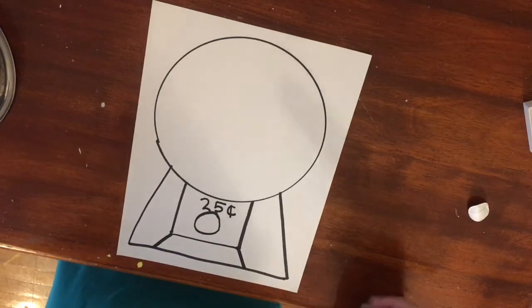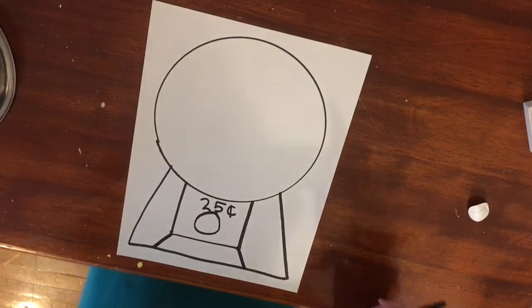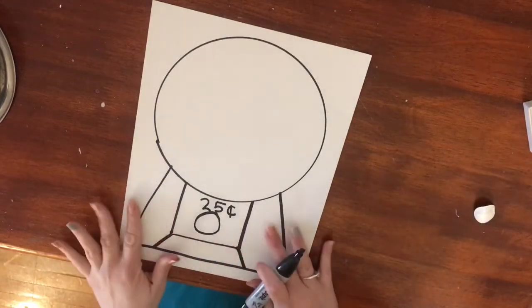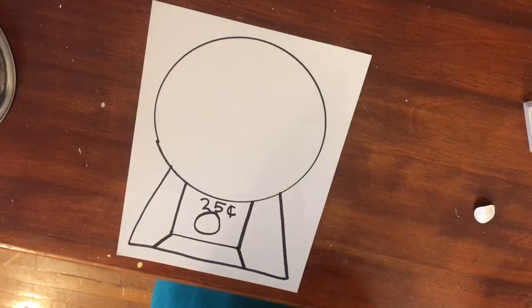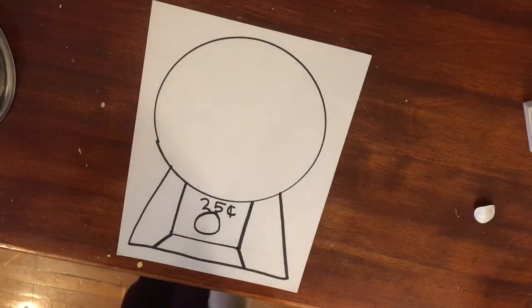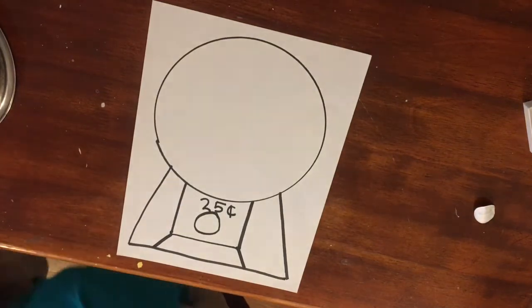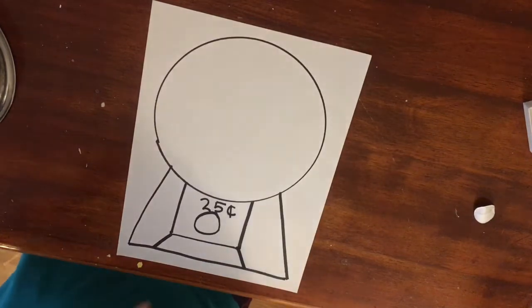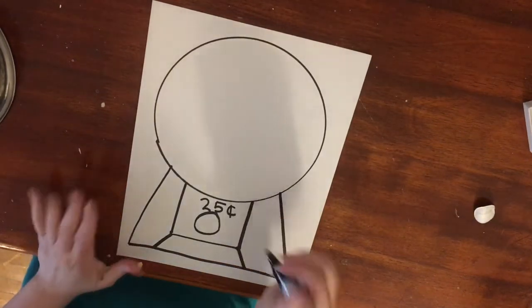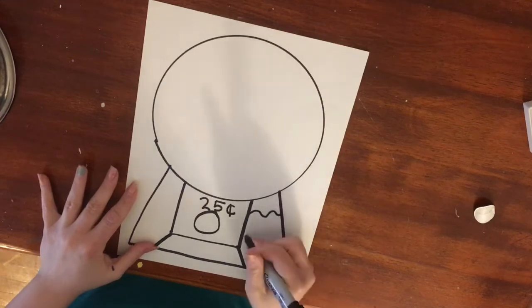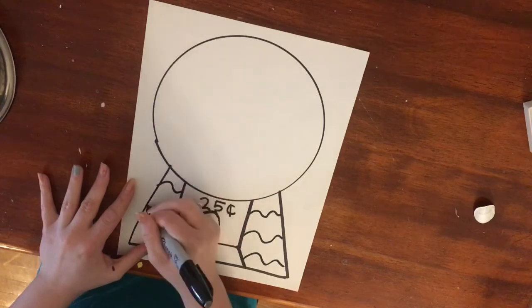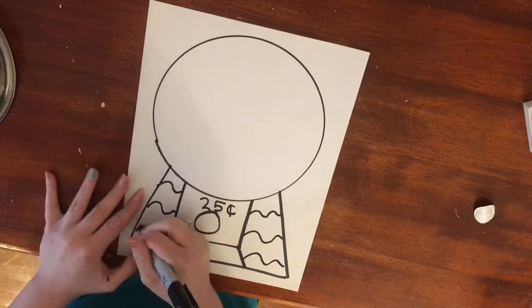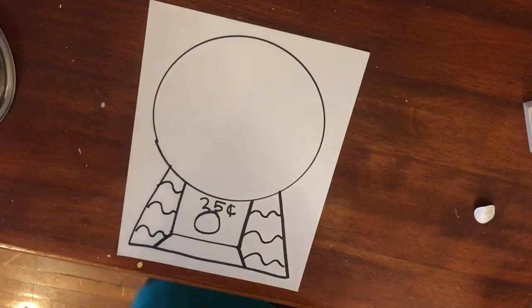Alright now what we're going to do is we're going to start to put some designs in our gumball machine. Now a lot of times a gumball machine you might see that bright red color but if you want to add a pattern in yours or repeated line just to make it a little different and extra special you can. So for mine I'm going to just go in with a marker and add some wiggling lines to add some extra detail and pattern in mine. It's gonna make my coloring take a little longer but that's okay with me.